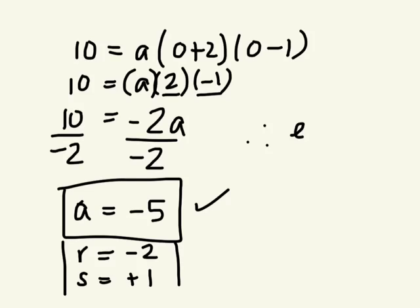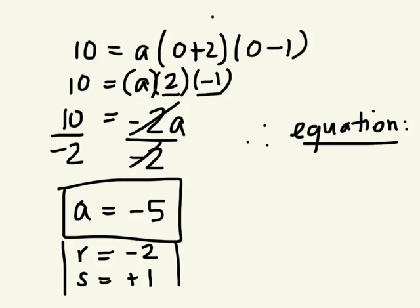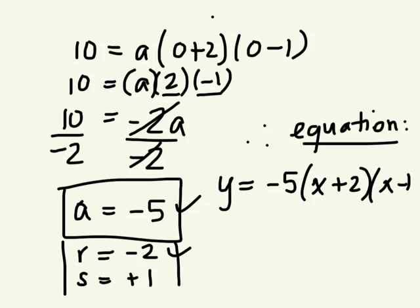Can we write the equation? The question said, determine an equation of this parabola. So therefore, what's the equation? Y equals negative 5. That's my a. Bracket x plus 2, right? It's opposite. And x minus 1. That's it. That's the equation of this parabola.